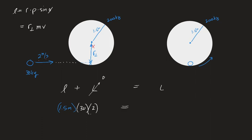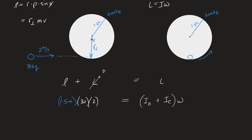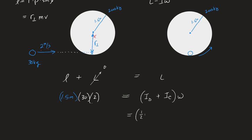After the kid jumps on the merry-go-round, we have angular momentum for a spinning object: that's I times omega. The moment of inertia I here has two parts: the moment of inertia of the disk — the merry-go-round — plus the moment of inertia of the child, a point mass at the edge of the merry-go-round. If the merry-go-round is a disk, that's one-half MR squared. If the child is a point mass, that's just MR squared. All times omega, and this gives us a way of solving for how fast the system spins.